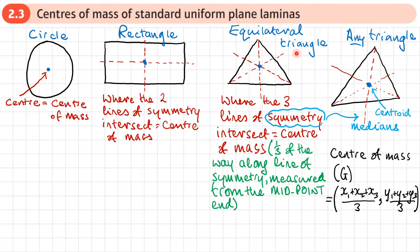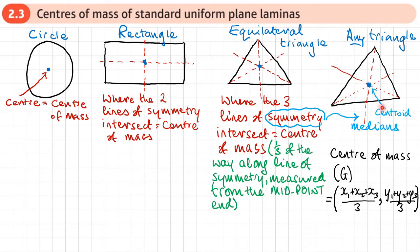If it's not an isosceles or equilateral triangle, there aren't going to be lines of symmetry, but we draw in lines called medians. These medians go from a vertex to the midpoint of the opposite side. If we draw in all three medians, we locate the centroid, which is where the center of mass G is. It is also one third along the median line from the midpoint end — the same rule applies for all three medians.